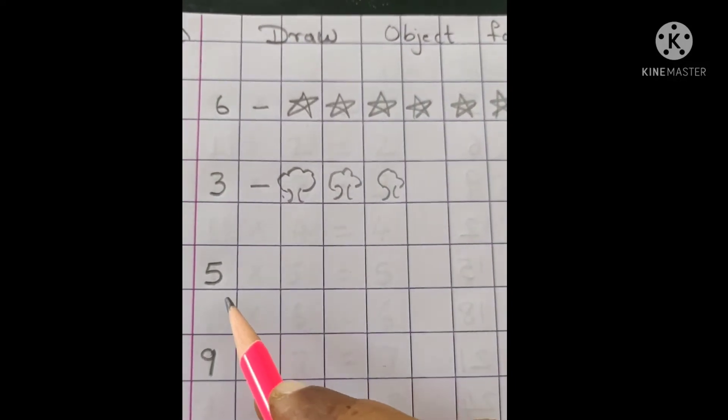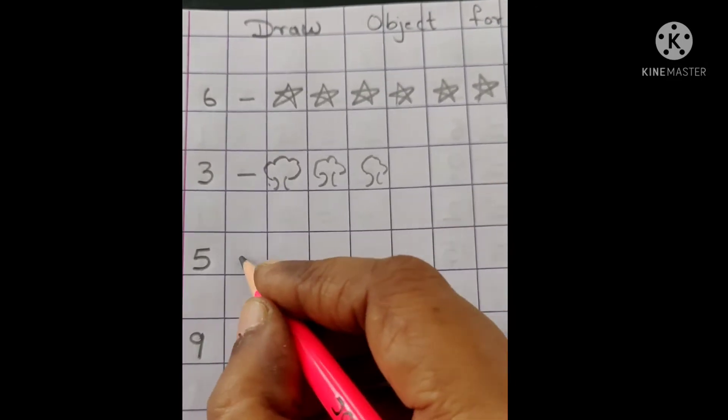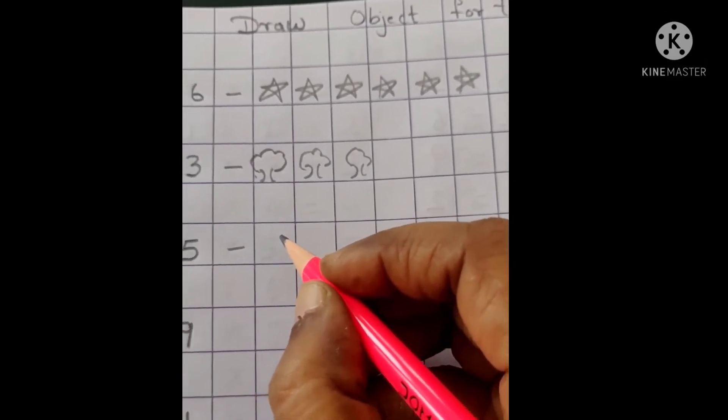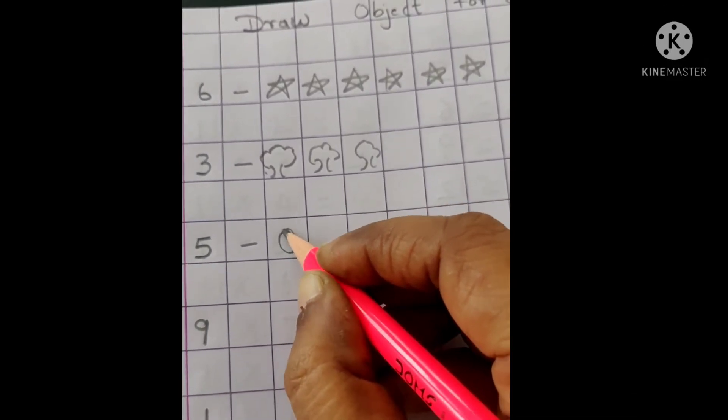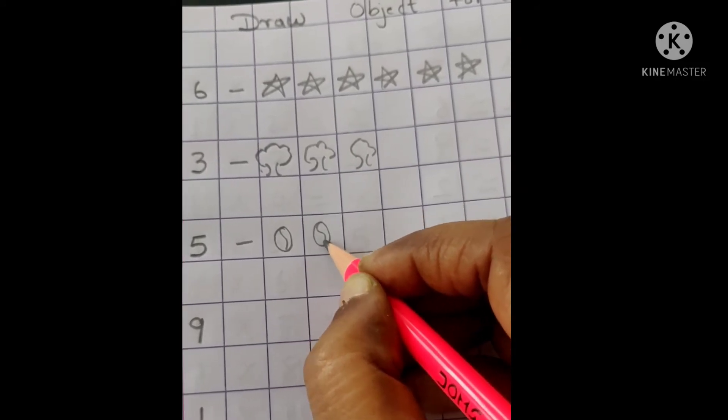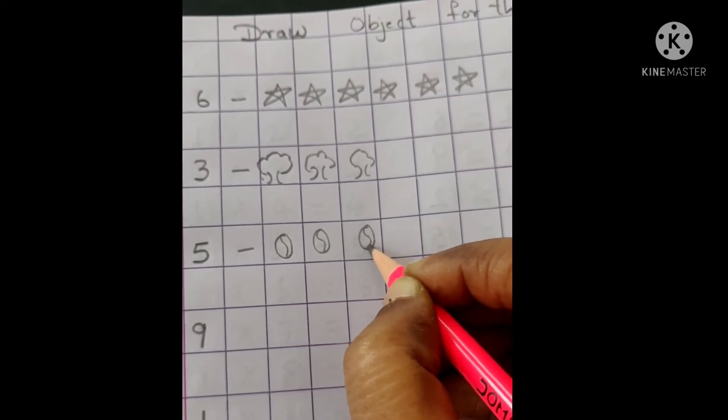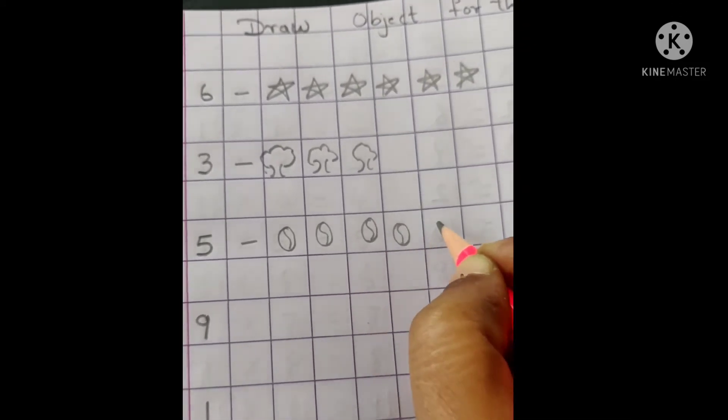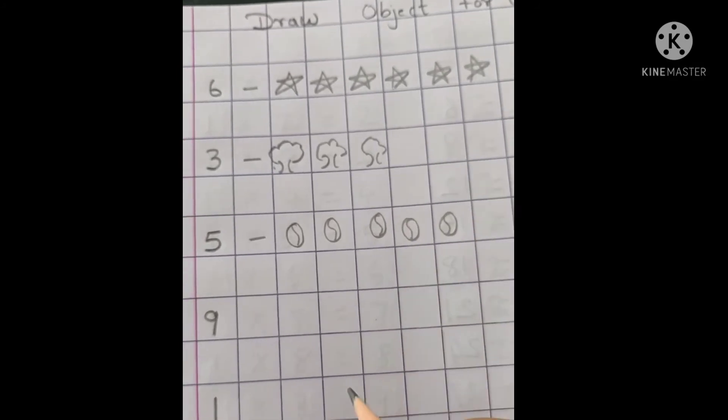Now, next is number 5. So what will we draw? 5 balls. 1, 2, 3, 4, 5. 5 balls.